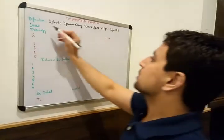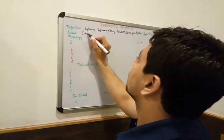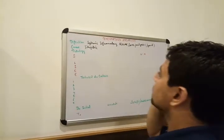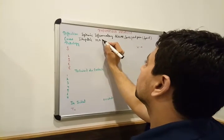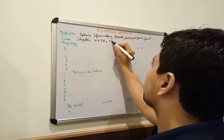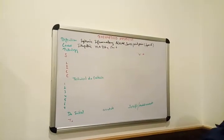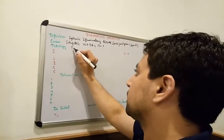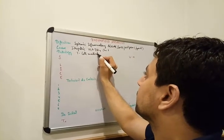What are the causes? Nobody knows — it is idiopathic. The gene involvement is HLA-DR4 on chromosome number 6. The pathophysiology of Rheumatoid Arthritis is T-cell mediated.